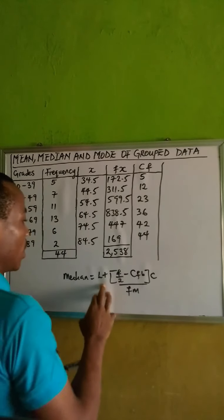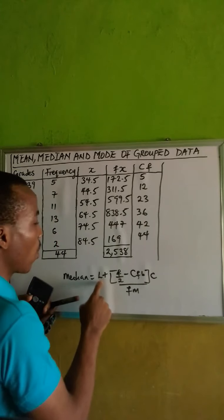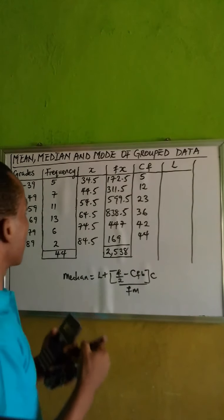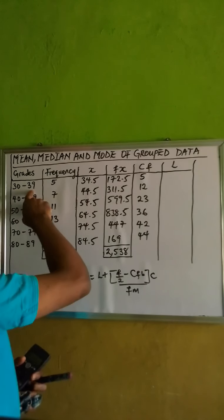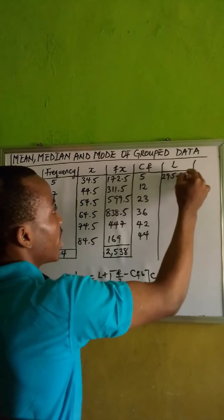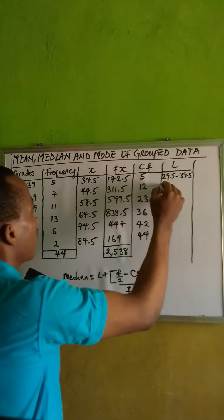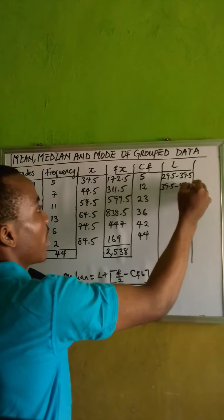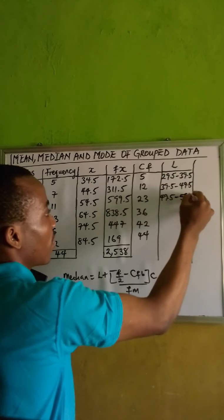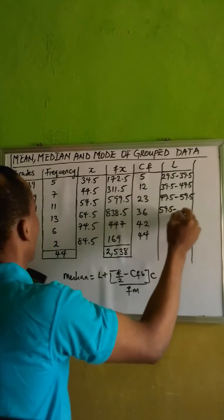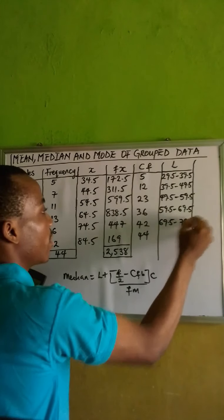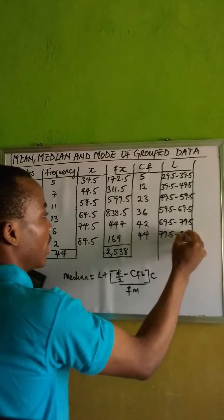Next we need the lower class boundaries. To get the lower class boundaries, subtract 0.5 from the lower end and add 0.5 to the upper end of each class interval. So subtracting 0.5 from the first class gives 29.5, and adding 0.5 gives 39.5. Continuing this pattern: 39.5–49.5, 49.5–59.5, 59.5–69.5, 69.5–79.5, and 79.5–89.5.